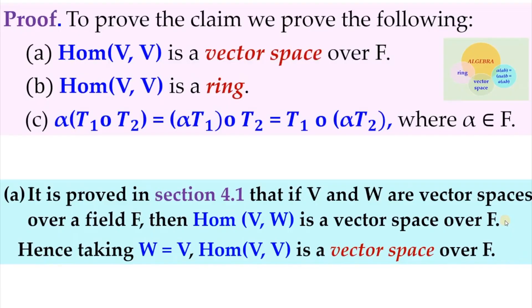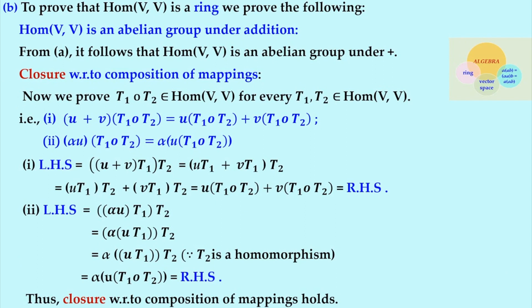The scalars are from the field F. To prove the claim, we first note that Hom(V,V) is a vector space — this is already proved. It is proved in section 4.1 that if V and W are vector spaces over a field F, then Hom(V,W) is a vector space over F. By taking W as V, Hom(V,V) is a vector space over F. Next we verify the three axioms for Hom(V,V) to be a ring.